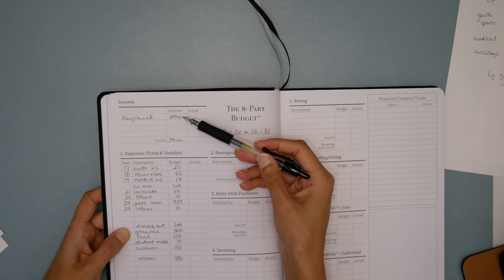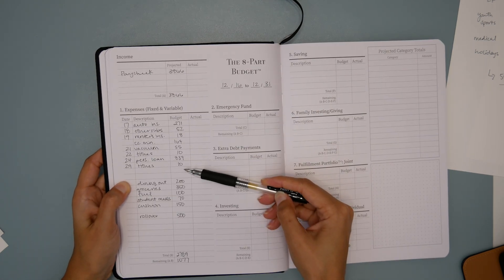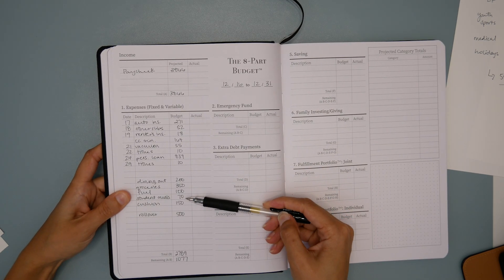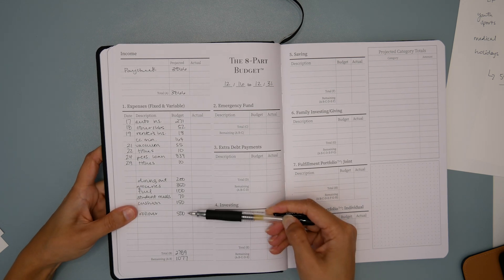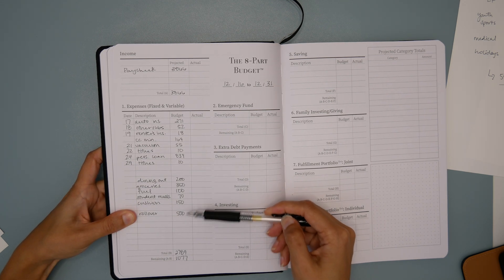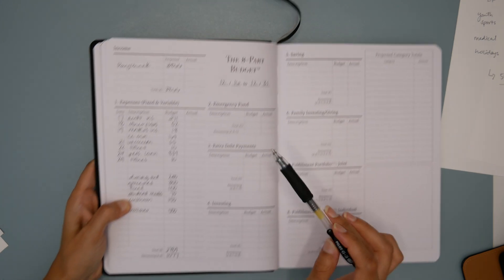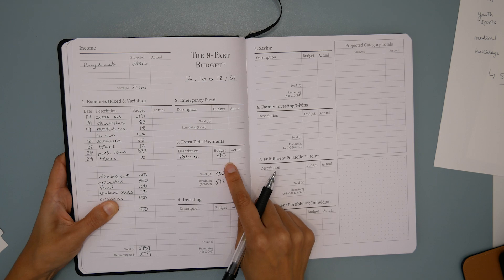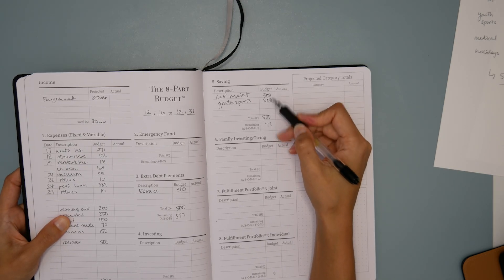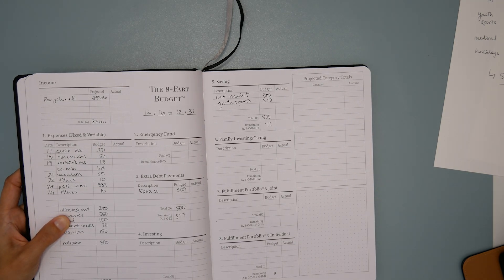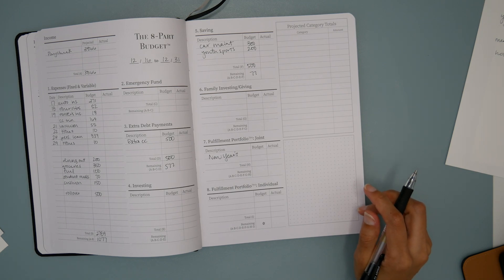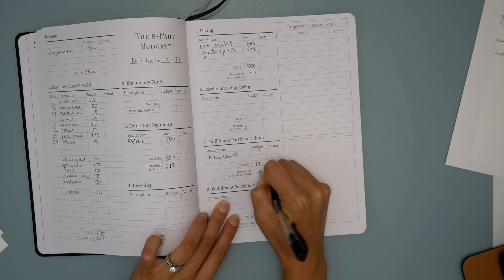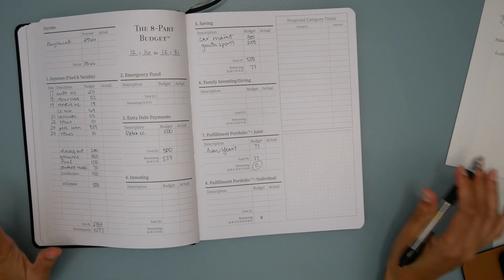For the second half of December, we have her paycheck, the bills that are going to be covered between the 16th and 31st, variable spending, a cushion, and again, here's that rollover. This line is going to be applicable to every second half of the month budget moving forward. We have $1077 left to work with. Let's put an extra $500 on that credit card, nourish these two buckets again, and then that $77, let's say she ends up wanting to do something with her child for New Year's. Maybe she invites friends over, has a small shindig. We can put the remaining funds towards that.